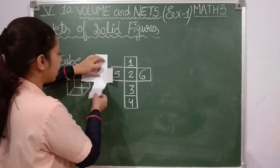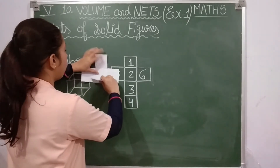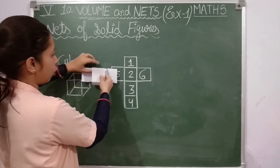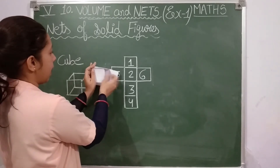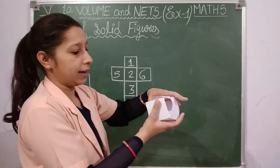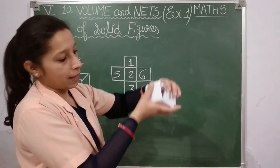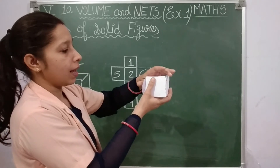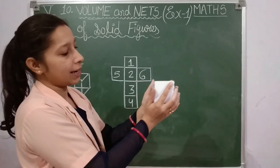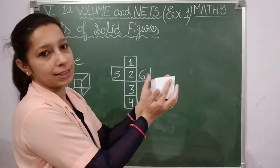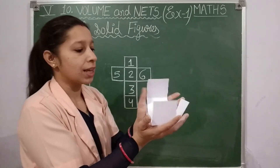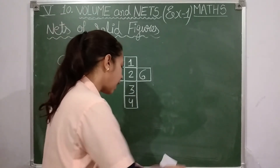The first, second, and third folds are the sides, the fourth fold will be the top, and the fifth and sixth folds complete the cube. Our cube is ready! You can also make one yourself — stick it and you will get the cube shape. I hope the net topic is clear to you.